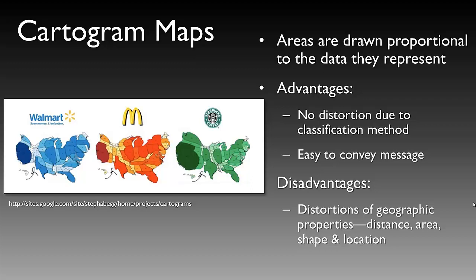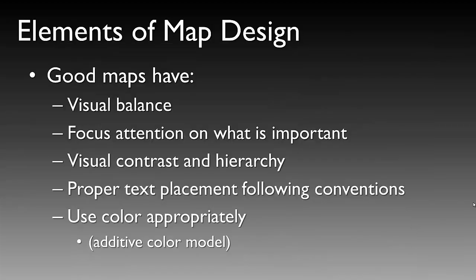The last type of map or data display we will discuss are cartograms. Cartograms are areas drawn proportional to the data they represent. An advantage is that there is no distortion due to the classification method and it is very easy to convey the message. However, the disadvantage is that there is distortion to geographic properties such as distance, area, shape, and location. An example shows number of Walmarts, McDonald's, and Starbucks proportional to the size and shape of the state they represent.